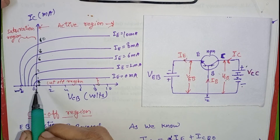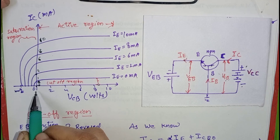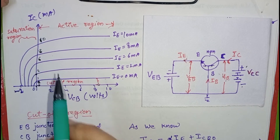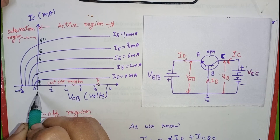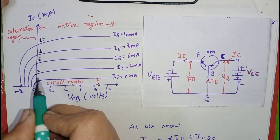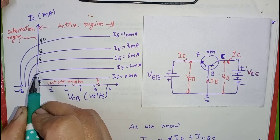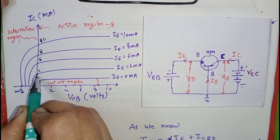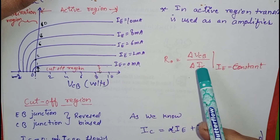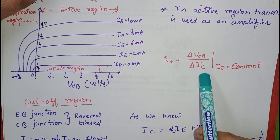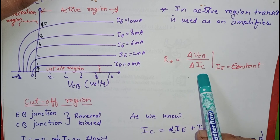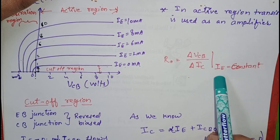We can see here, even when VCB equals to 0, there is a flow of current IC in the circuit. When VCB equals to 0 and we have fixed IE equals to 2 mA, the current almost equal to 2 mA also flows in the circuit. By finding the slope of these curves, we can find the output resistance of common base configuration, that is change in VCB divided by change in IC at a constant current IE.